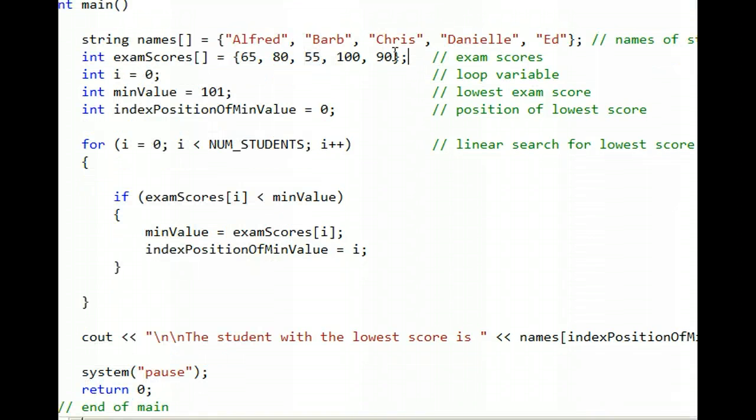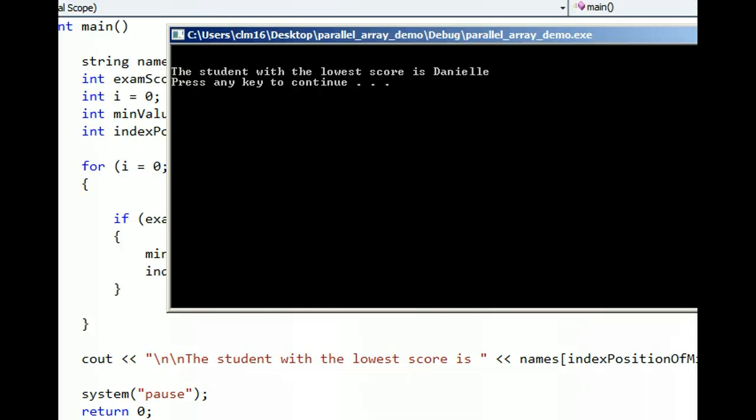Let's just play with the program and make sure it really works. Let's make the program change the code so that Danielle has the lowest score. Instead of a 100, let's change her score to 1. I execute the program again, and it should print out Danielle. Yep, it works.